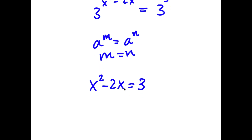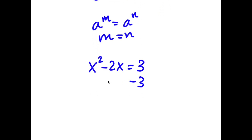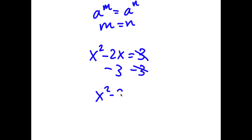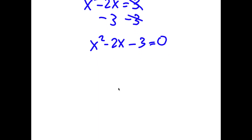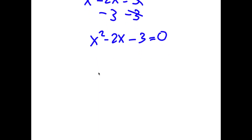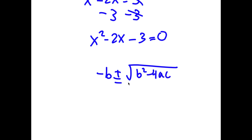So now to solve this, I'm going to subtract 3 on both sides — these two cancel out, so now I have x squared minus 2x minus 3 is equal to 0. And now to solve this, I'm going to use the quadratic formula, which is negative b plus or minus the square root of b squared minus 4ac, all over 2a.